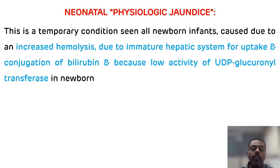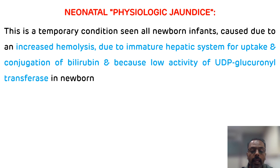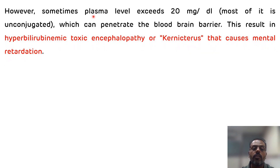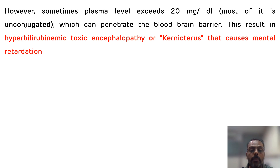However, when the plasma bilirubin level increases beyond 20 milligrams per deciliter, this bilirubin crosses the blood-brain barrier and gets deposited in the brain tissues, causing kernicterus and mental retardation. This is why treatment becomes necessary when plasma bilirubin levels exceed 20 milligrams per deciliter.